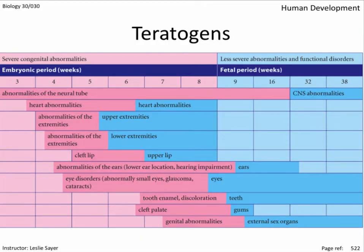Teratogens — congenital means what you're born with, and susceptibility to congenital abnormalities is most severe within the first two months of conception. Teratogens are agents, chemicals, or microbes capable of causing developmental abnormalities while in the uterus. While people may initially think of pesticides and city smog as teratogens, the most common are cigarette smoking and, more severely and worse because it's so preventable, alcohol.